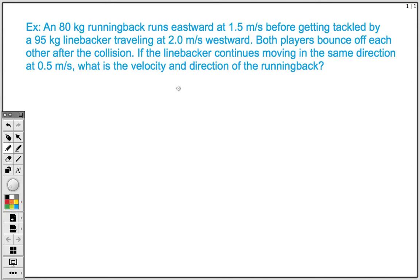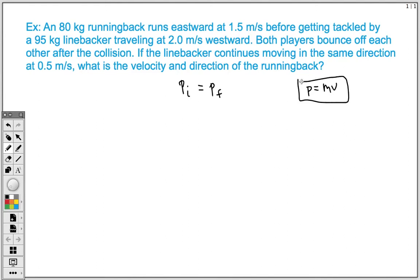The way that we go about showing this mathematically looks something like this. Our total initial momentum is equal to our total final momentum, where this lowercase p is the symbol for momentum. We know that our equation for momentum looks like this: p is equal to m times v, which is mass times velocity.